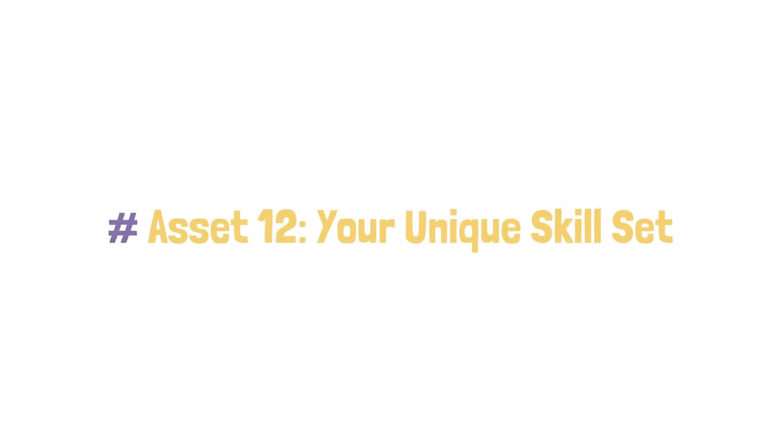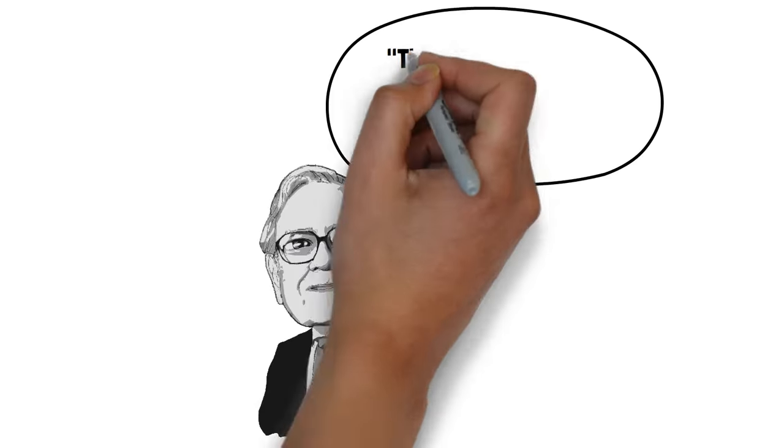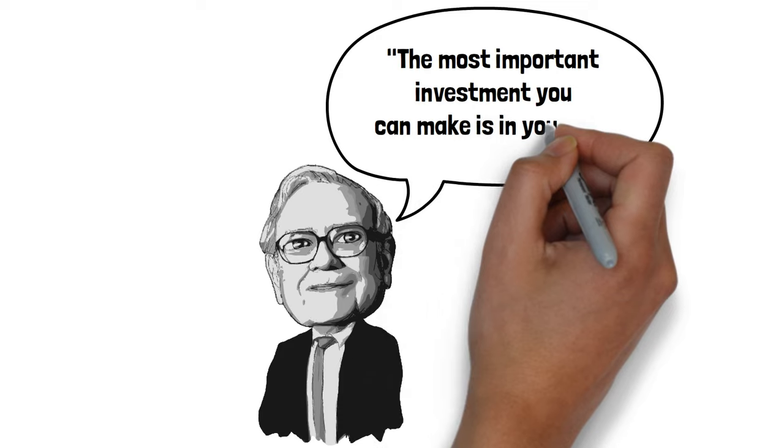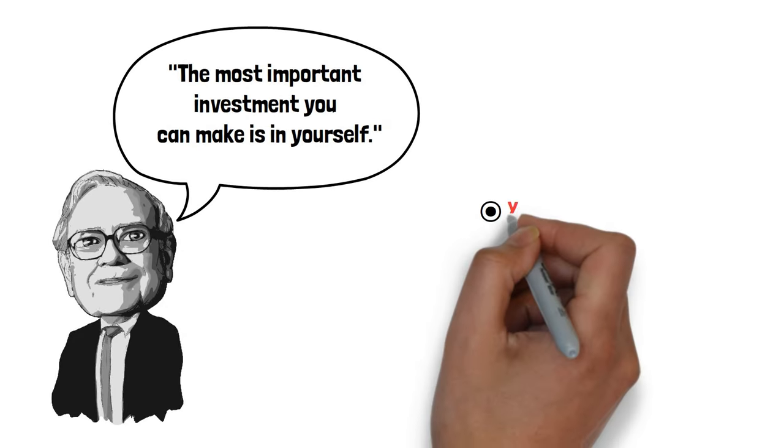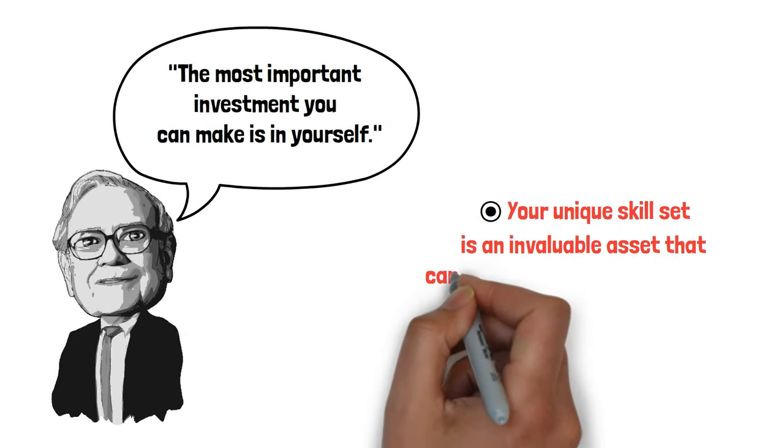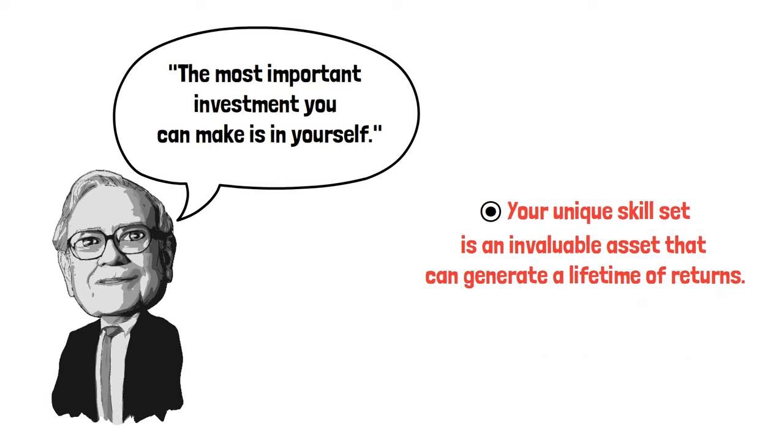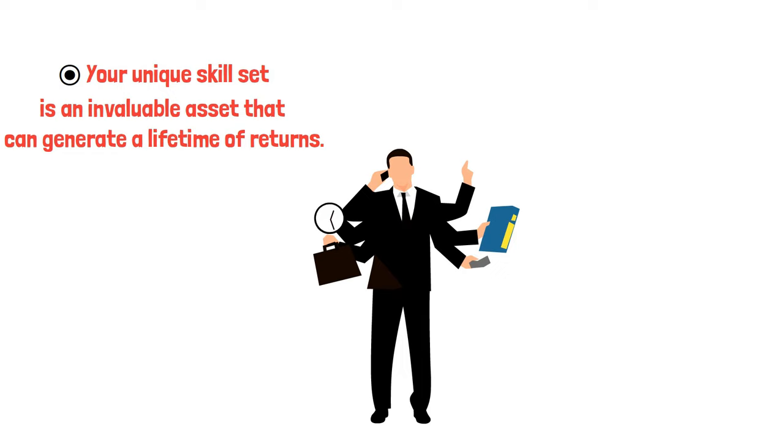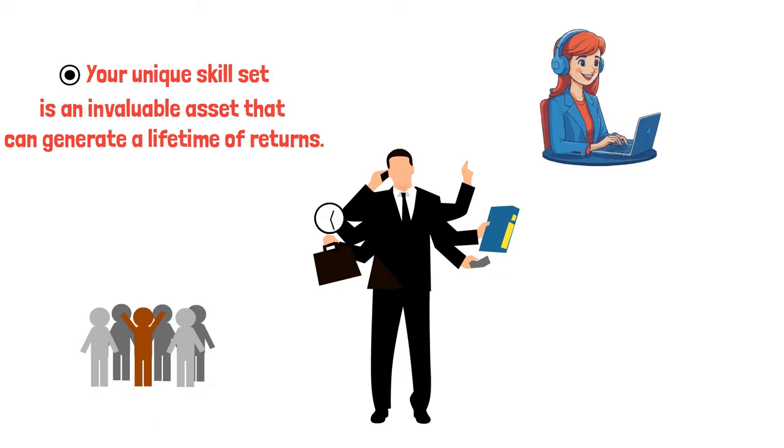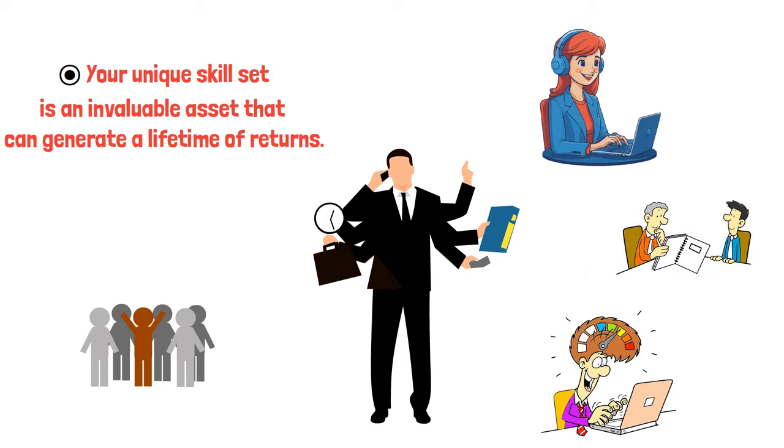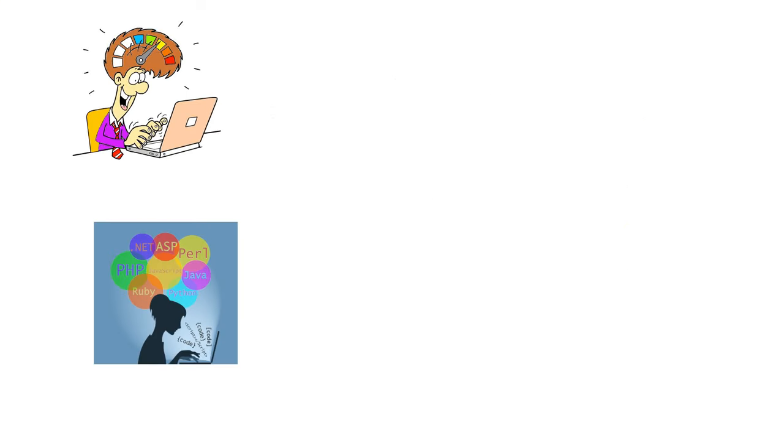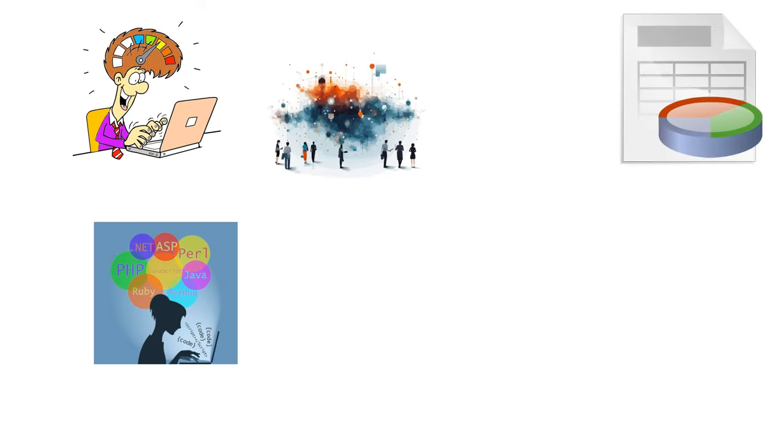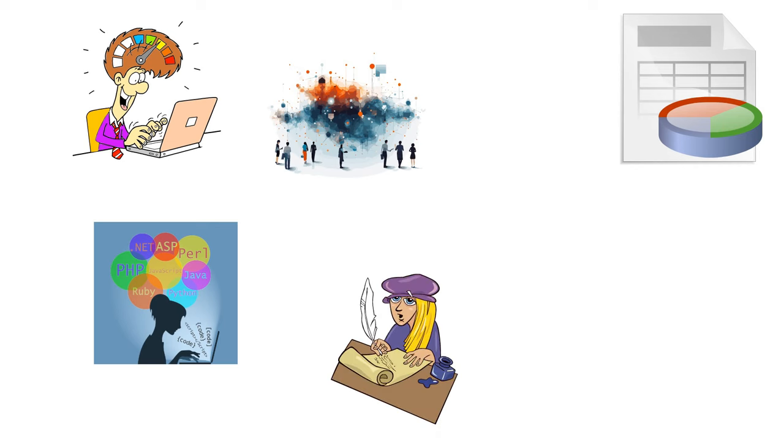Asset 12: Your Unique Skill Set. Warren Buffett once said, the most important investment you can make is in yourself. Your unique skill set is an invaluable asset that can generate a lifetime of returns. In the knowledge economy, having a unique skill set is critical. These include soft skills like leadership, communication, problem solving, and creativity, or hard skills like programming, digital marketing, data analysis, and foreign language proficiency.